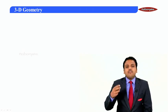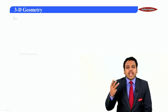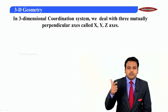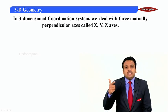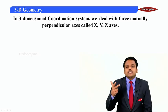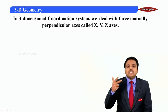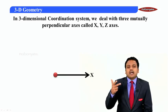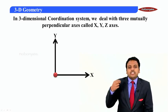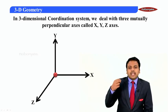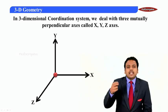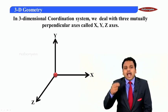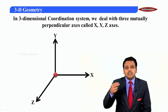In 3D, we will have three axes: x-axis, y-axis — which you are comfortable with already — and an extra axis, the z-axis. All three axes are mutually perpendicular to each other. Here, for every point we add a z-coordinate extra.